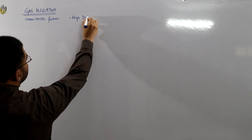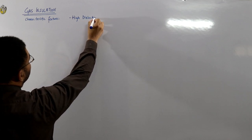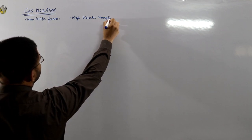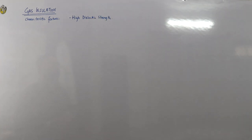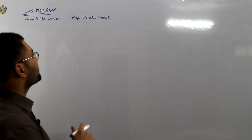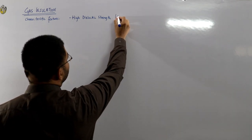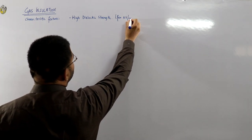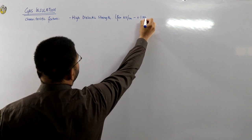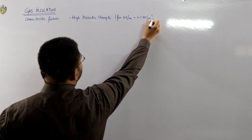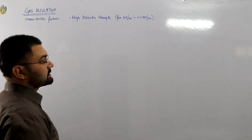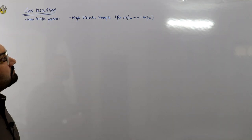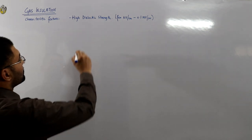Number one: it must have a high dielectric strength. We are using it for the purpose of insulation, so the higher the dielectric strength, the better the insulation. Gases roughly have a dielectric strength of a few kilovolts per centimeter up to a maximum of 0.1 megavolts per centimeter, which is 100 kilovolts per centimeter.